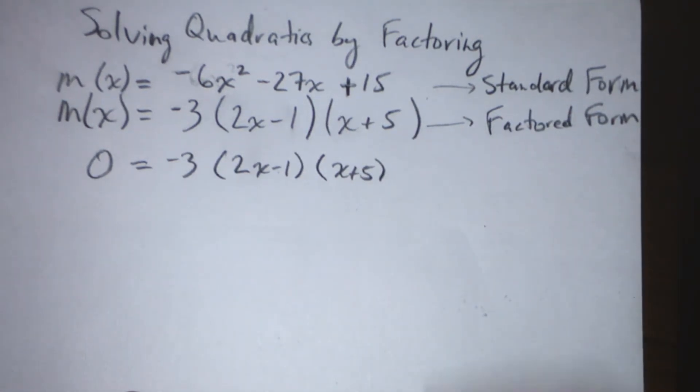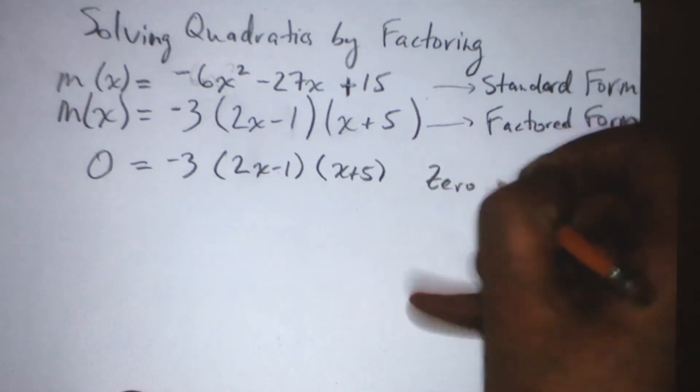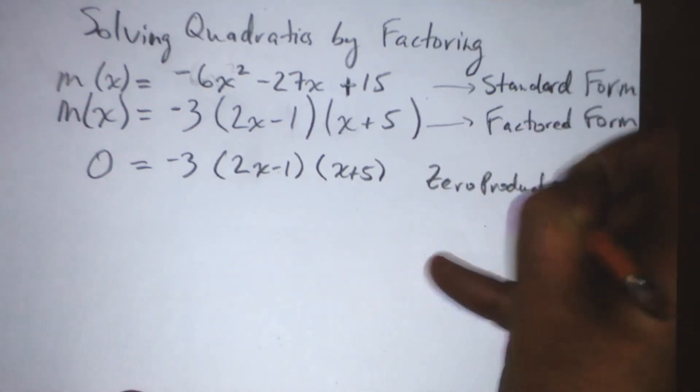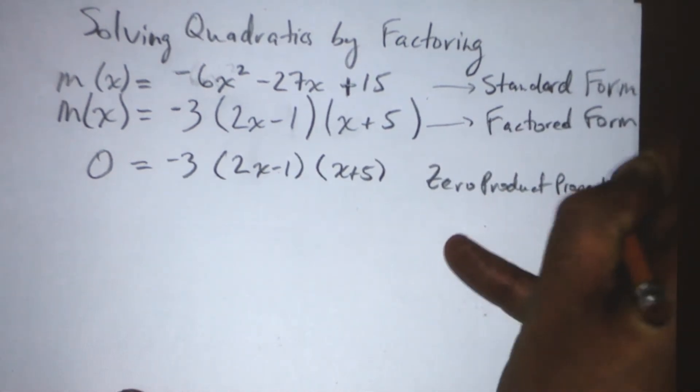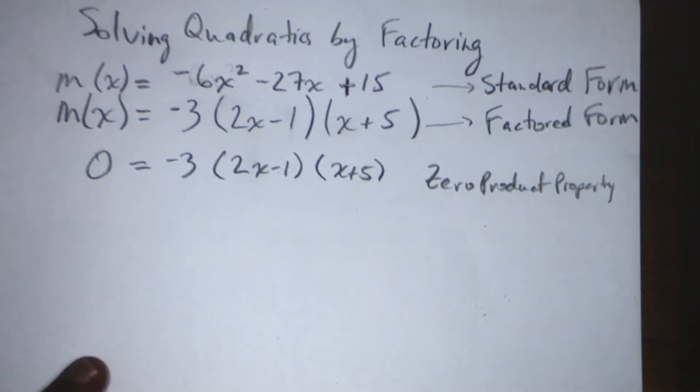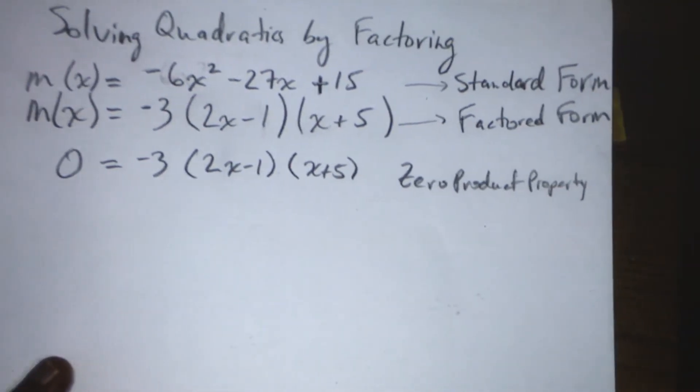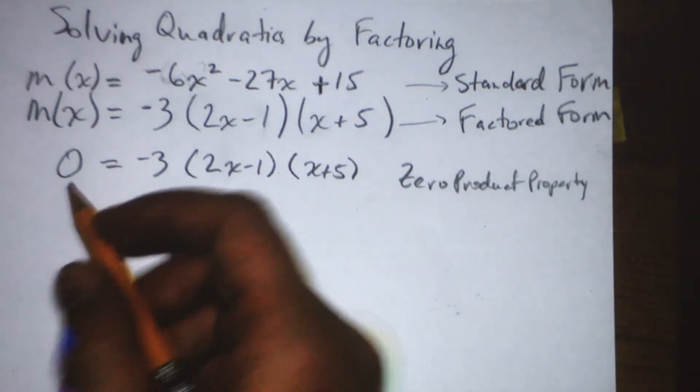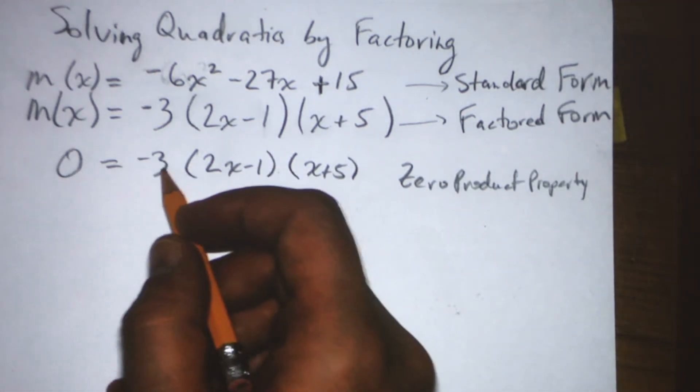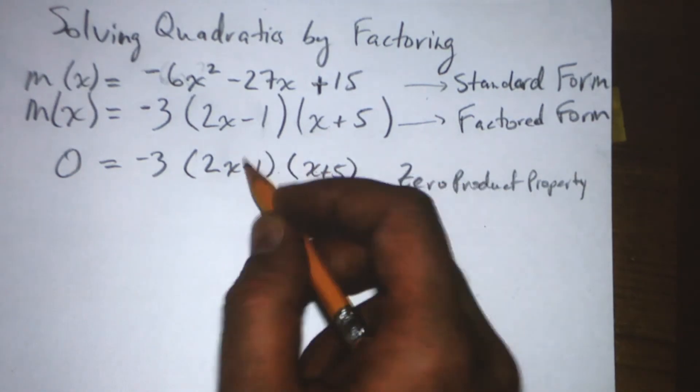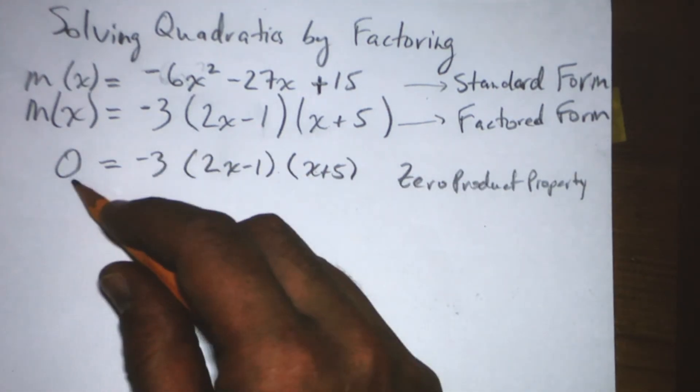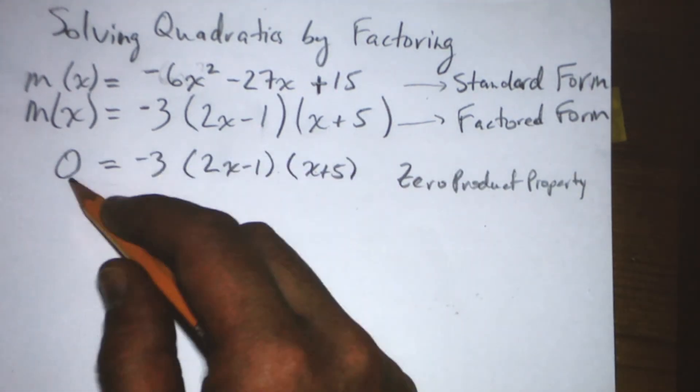Now, we use something called the zero product property. And all the zero product property says is that anything times 0 equals 0. So if we could get this factor equal to 0, then we would have something times something times 0 equals 0. The whole thing would equal 0. We would find a root.